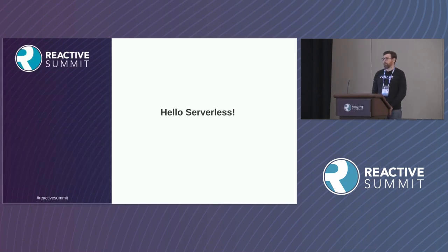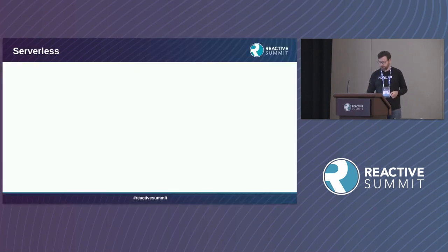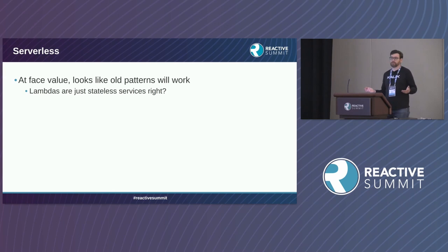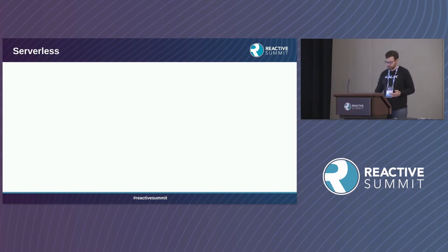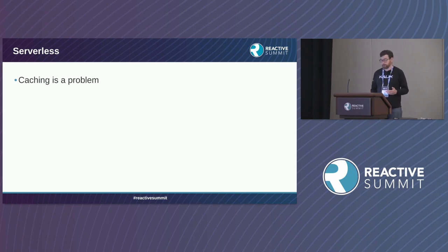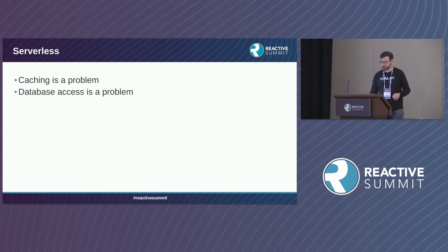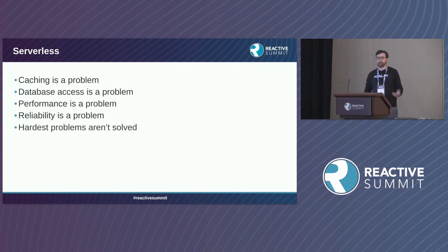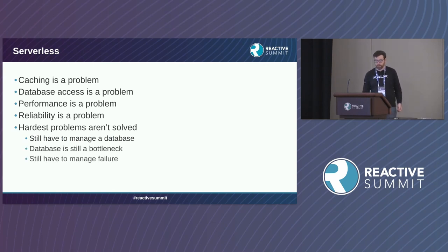Then serverless came along, around 2017 or 2018. At face value, just like with cloud, it looked like old patterns would work — lambdas are just stateless services, right? The fact is that lambdas were nothing like stateless services, and people found this out very quickly. You couldn't cache with them, database access was a problem because you'd be creating database connection pools just for one request. Performance can be a problem when you link them all up together, and reliability becomes a problem because you have no control over when they start and stop. Many of the hardest problems were still not solved.